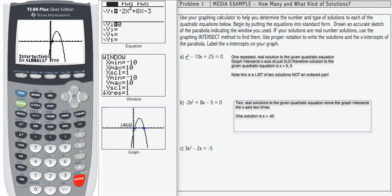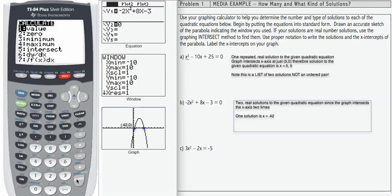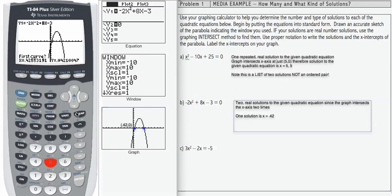To find the second solution, I'm going to run through the second calc process again. Number five, but I need to move my cursor closer to the second intersection than the first. Once I have it there, I can run the intersect process. I get my second solution, 3.58. I'm going to write that on the graph and in the white space at the right.